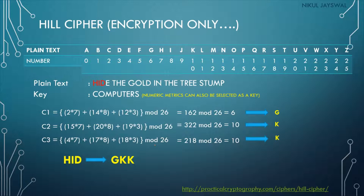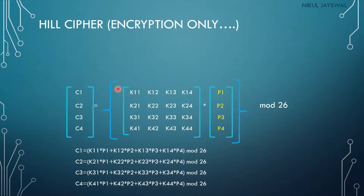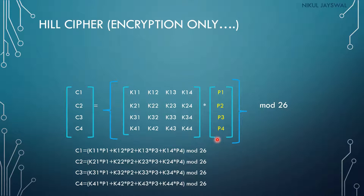So the encryption of the first three characters H, I, D gives the ciphertext G, K, K. We would then take the next three characters E, T, H and repeat the process. If you want to encrypt four characters at a time, you need a key of 16 characters, and if you increase the block further, the key size increases accordingly.